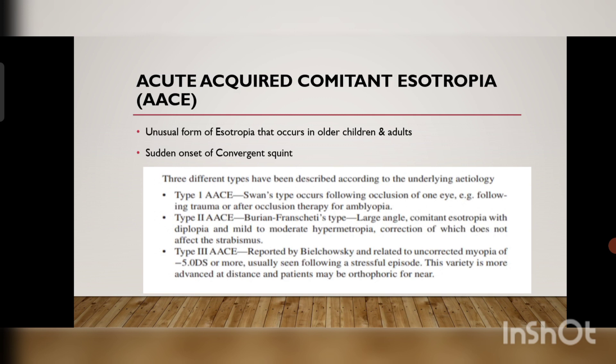Type 2 AAC is the Burian-Franzén type. There is a large-angle comitant esotropia with diplopia and mild to moderate hypermetropia, but correction of the hypermetropia does not improve the strabismus. Type 3 AAC, reported by Bielschowsky, is related to uncorrected myopia of minus 5 diopters or more. Usually seen following a stressful episode, this variety is more pronounced at distance and patients may be orthophoric for near.